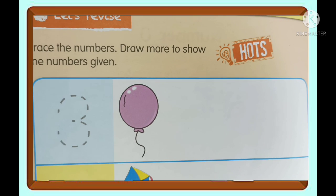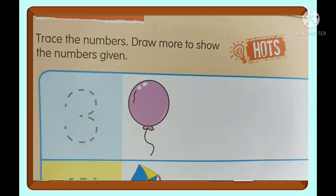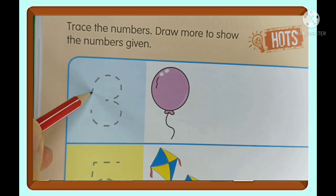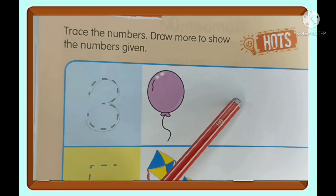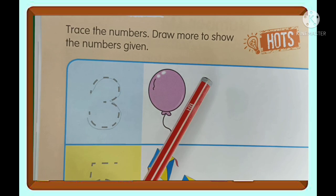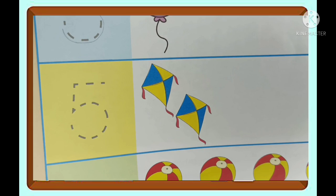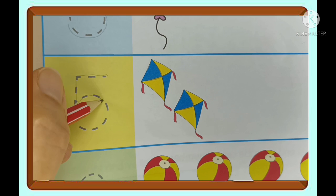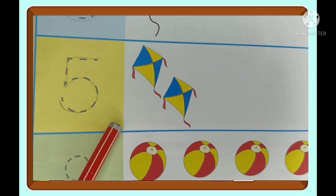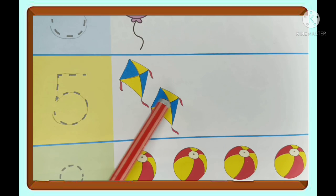For our revision sample, we are going to do this one. Let's review all those numbers. So we have here number three, and we are going to write number three here, like that. And Teacher Lynn will draw more to make it three — I have to draw more balloons, one and then two to make it three. And here I have number five, so we are going to write number five. Since I have only two kites here, I have to draw one, two, three more kites to make it five.